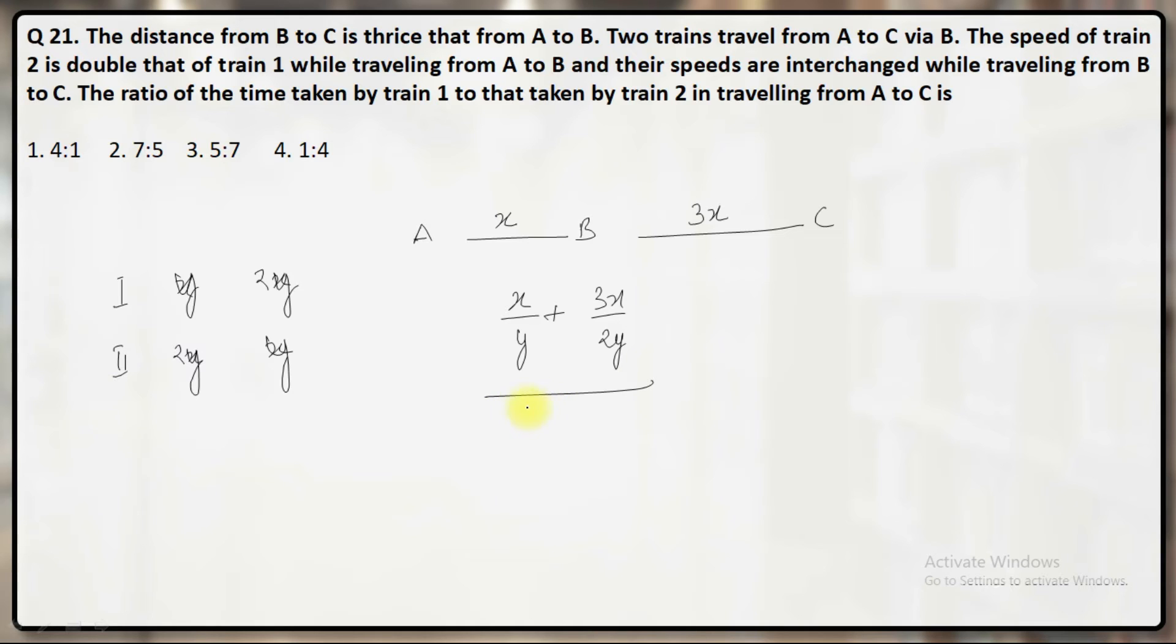Similarly, time taken by the second train, it will cover X kilometer with the speed of 2Y and the remaining 3X kilometer with the speed of Y.